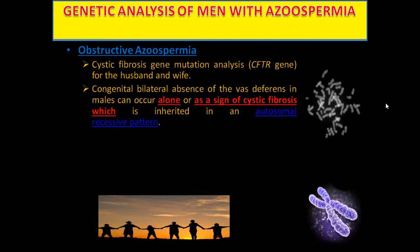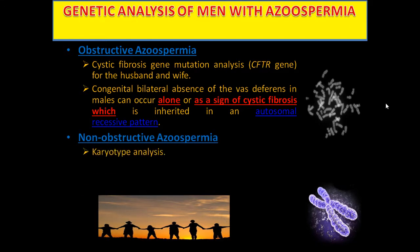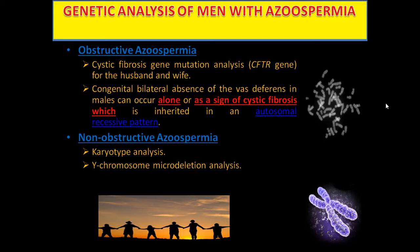Cystic fibrosis is inherited in an autosomal recessive pattern. For non-obstructive azoospermia: karyotype analysis, Y-chromosome microdeletion analysis, and other gene deletion mutations.